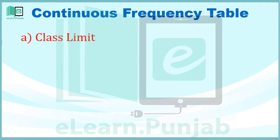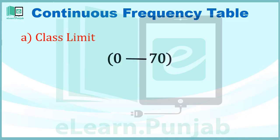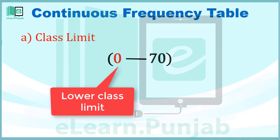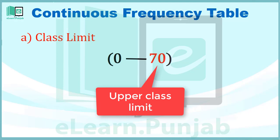Class Limit: एक Class या Group को Define करने के लिए सबसे छोटी और सबसे बड़ी Value को Class Limit कहते हैं। सबसे छोटी Value को Lower Class Limit और सबसे बड़ी Value को Upper Class Limit कहते हैं।